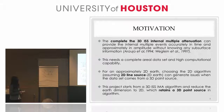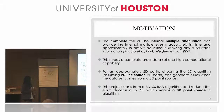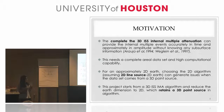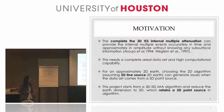First is the motivation of this subject. We see that the complete 3D SS internal multiple attenuation, proposed by Arugio in 1994 and Weglein in 1997, can provide internal multiple events accurately in time and approximately in amplitude, without knowing any subsurface information. However, this method needs a complete area data set and high computational capability. So for an approximately 2D Earth, people usually choose the 2D algorithm, assuming a 2D line source and a 2D Earth. But the source dimension in the real data is close to a 3D point source, which is local.